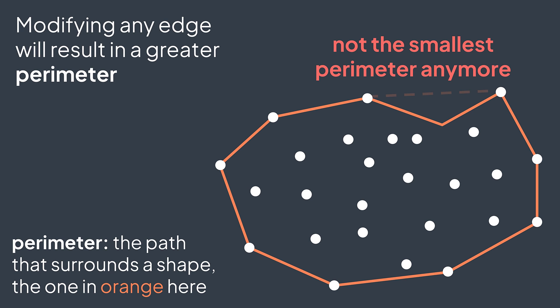So if we modify any edge without breaking the property, even to the inside of the polygon, we'll get a longer perimeter. Which means that if we want to go between two points that are on the border without entering the polygon, we can just keep walking on the perimeter of the convex hull.